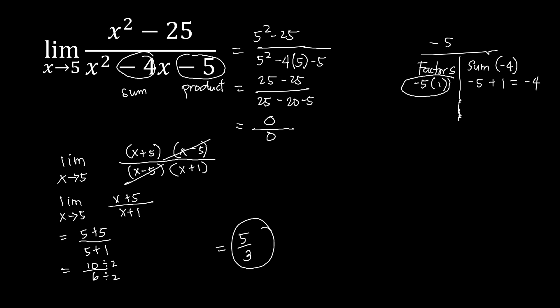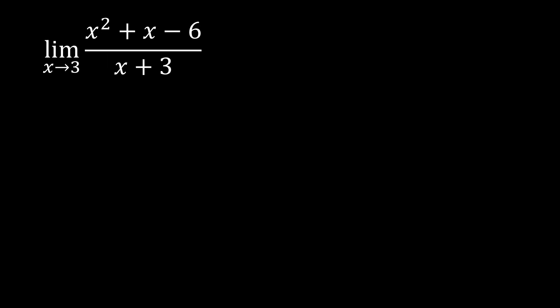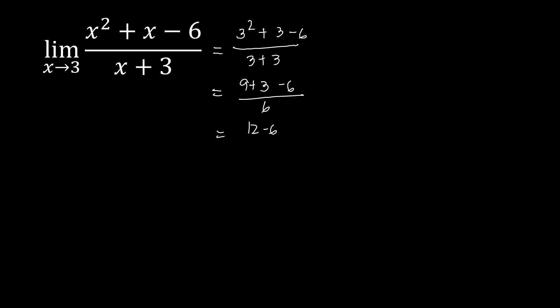For the last problem, we have the limit of x squared plus x minus 6 over x plus 3 as x approaches 3. Trying substitution: 3 squared plus 3 minus 6 over 3 plus 3 equals 9 plus 3 minus 6 over 6, which is 6 over 6, equal to 1.